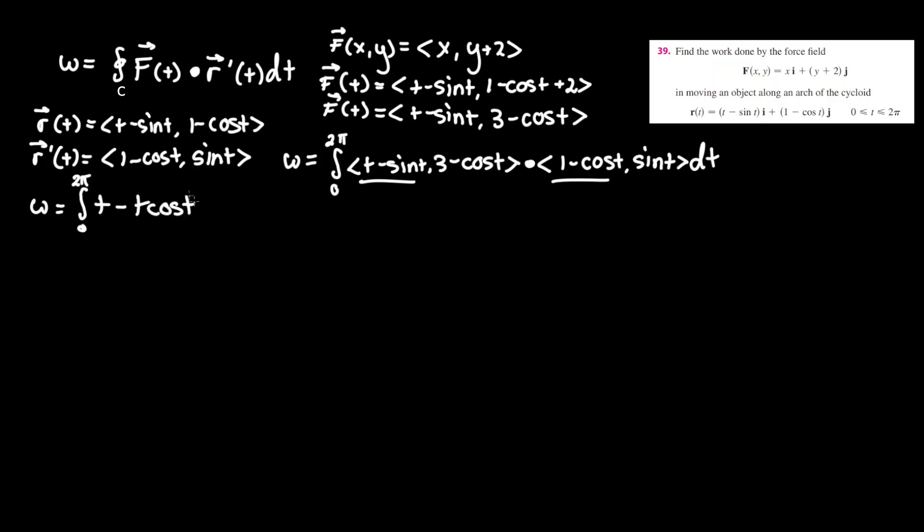And now for this term minus sine t plus sine t times cosine t since both the negatives cancel out, plus sine t times cosine t.